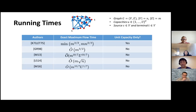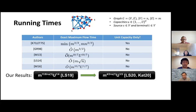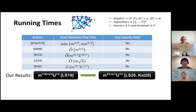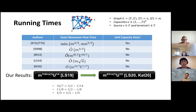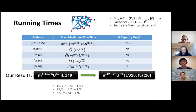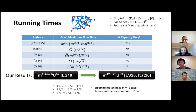Our main result is an improved runtime for max flow. Building off the work of Madri, in sparse unit capacity graphs, we achieve a runtime of M to the 11-eighths in our first paper, and M to the four-thirds in our second paper. The exponents 10-sevenths, 11-eighths, and four-thirds are all three-halves minus one-over-14, one-eighth, and one-sixth respectively — the improving amount corresponds to achieving better trade-offs inside the method. As a corollary, we also get an M to the four-thirds runtime for bipartite matching.